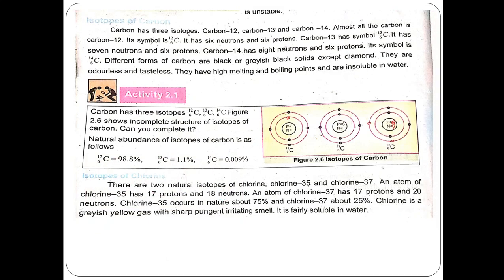Next, we have the isotopes of carbon. Carbon has 3 isotopes: carbon-12, carbon-13, and carbon-14. Almost all carbon is carbon-12. Its symbol is C with atomic number 6 and mass number 12. It has 6 neutrons and 6 protons.